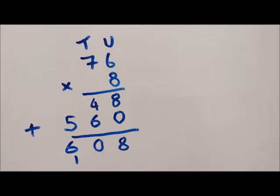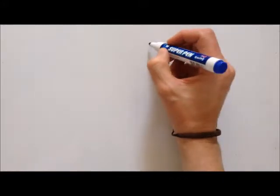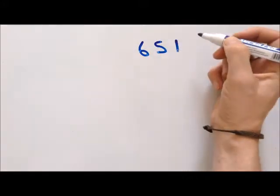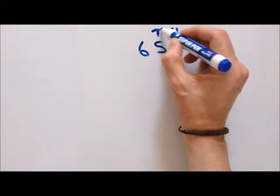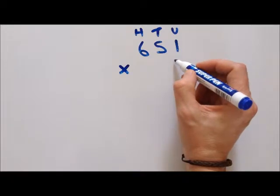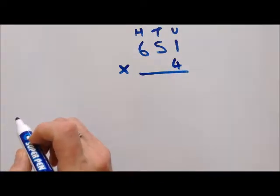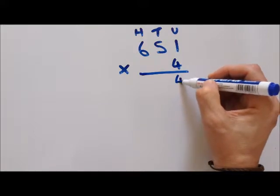Now let's try it with a three digit number. This can take up a lot of space with this method, but it clearly highlights the importance of getting our columns nicely in line. Let's do six hundred and fifty one, and we'll keep it to a lower times table to make it easy. We have units, tens and hundreds columns, and we'll times it by four. One times four is four — we've done our units column already.